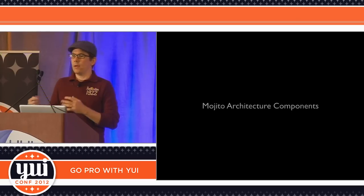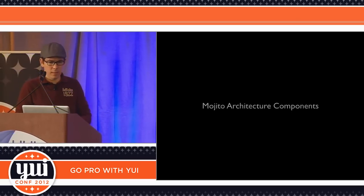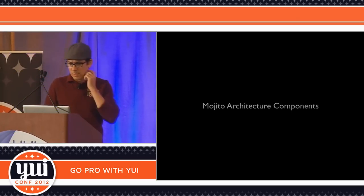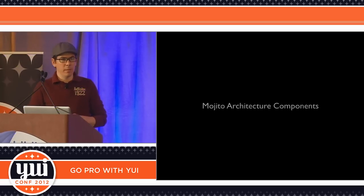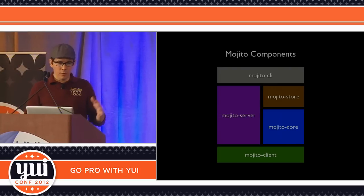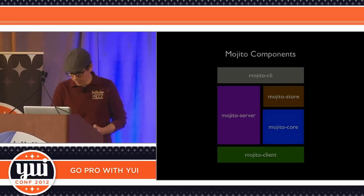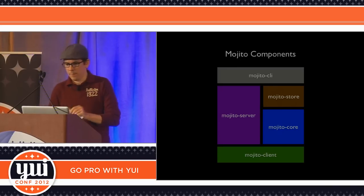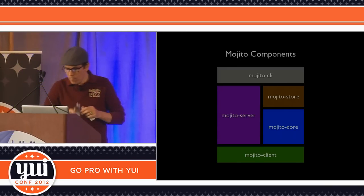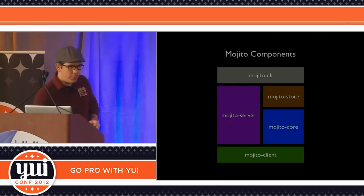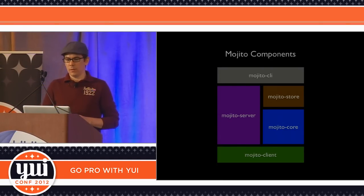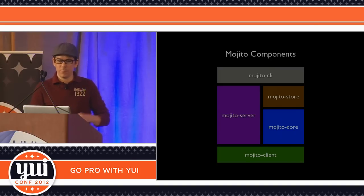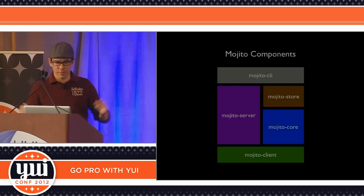Let's look at some Mojito architecture components to give you a sense of what we've been doing. Mojito has five main components: the Mojito CLI, the Store, the Core, the Server, and the Client.